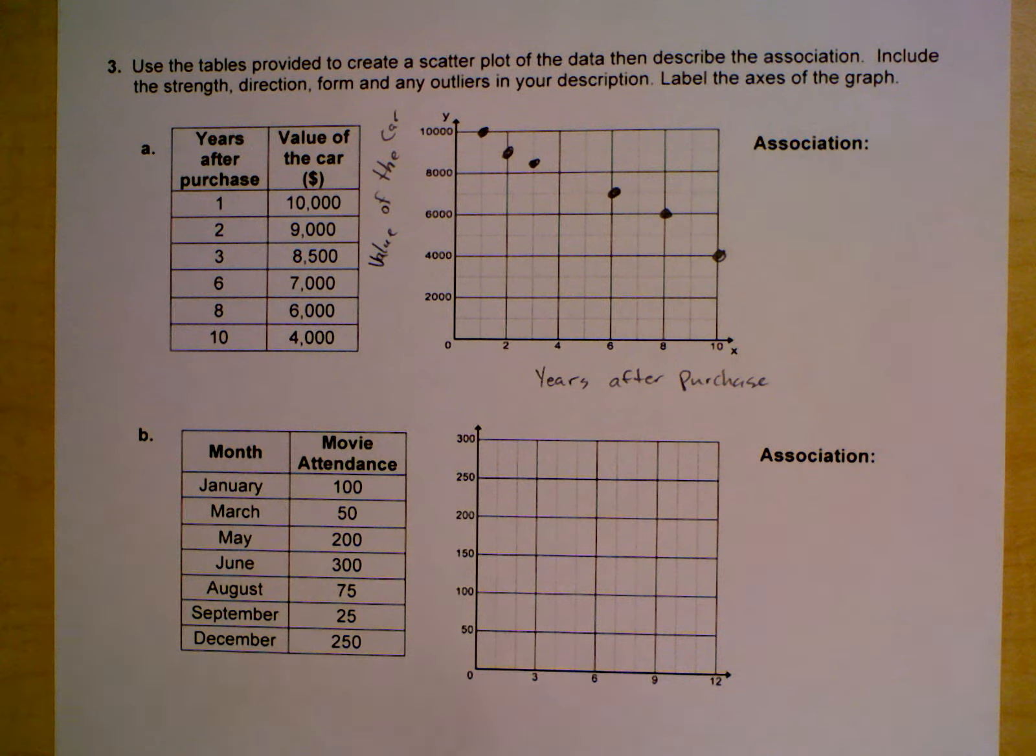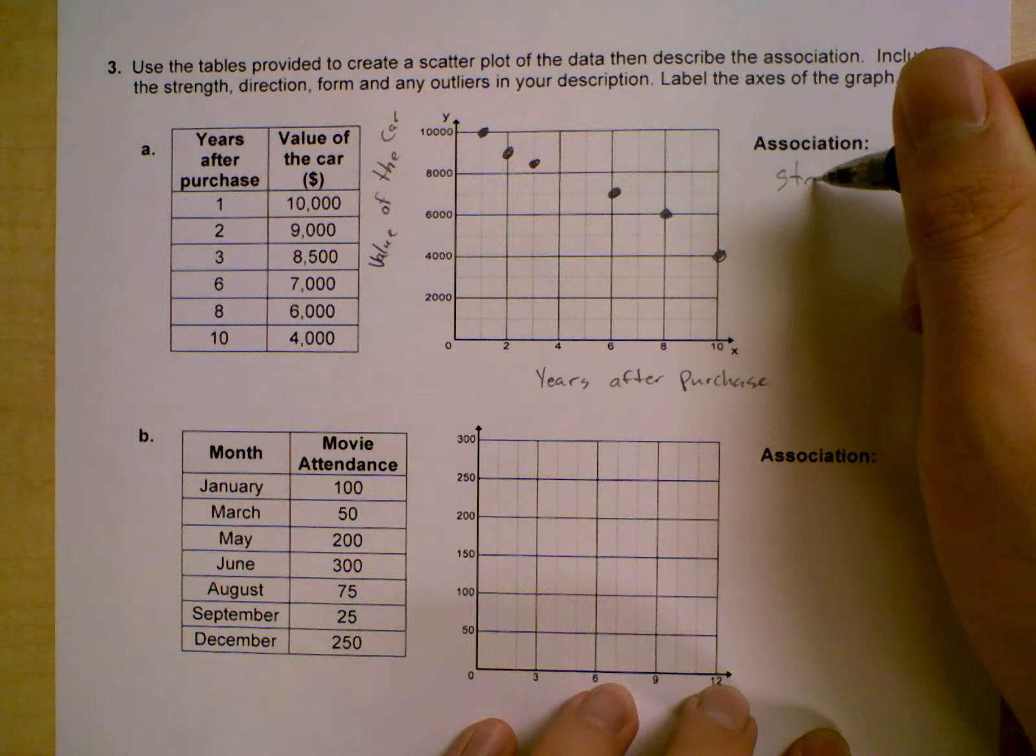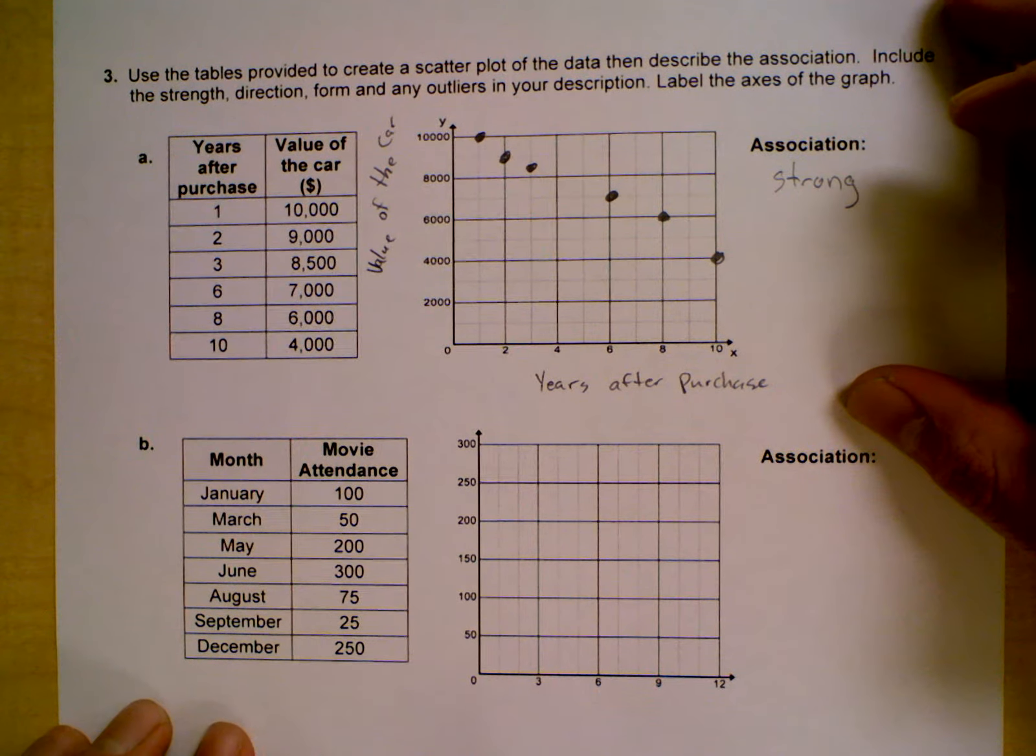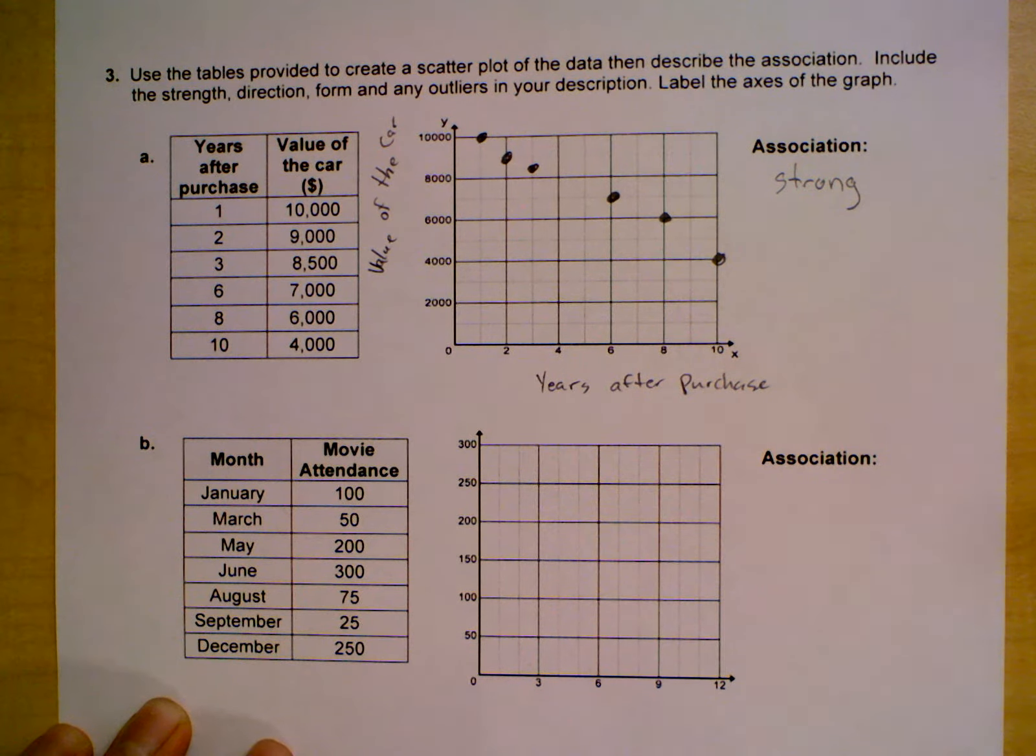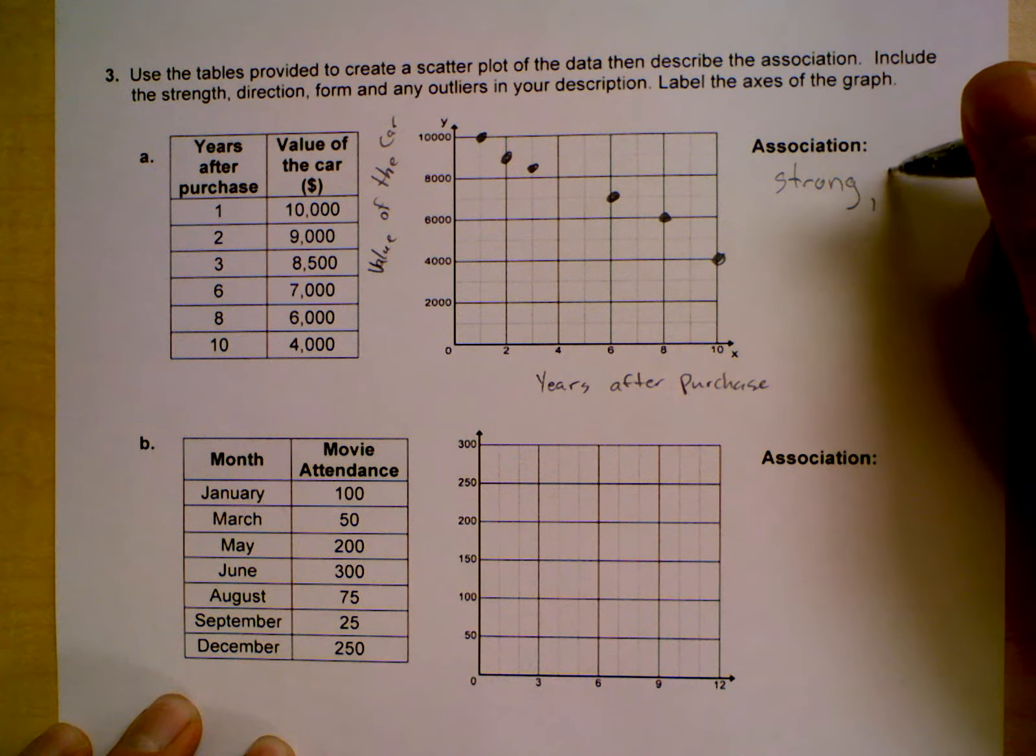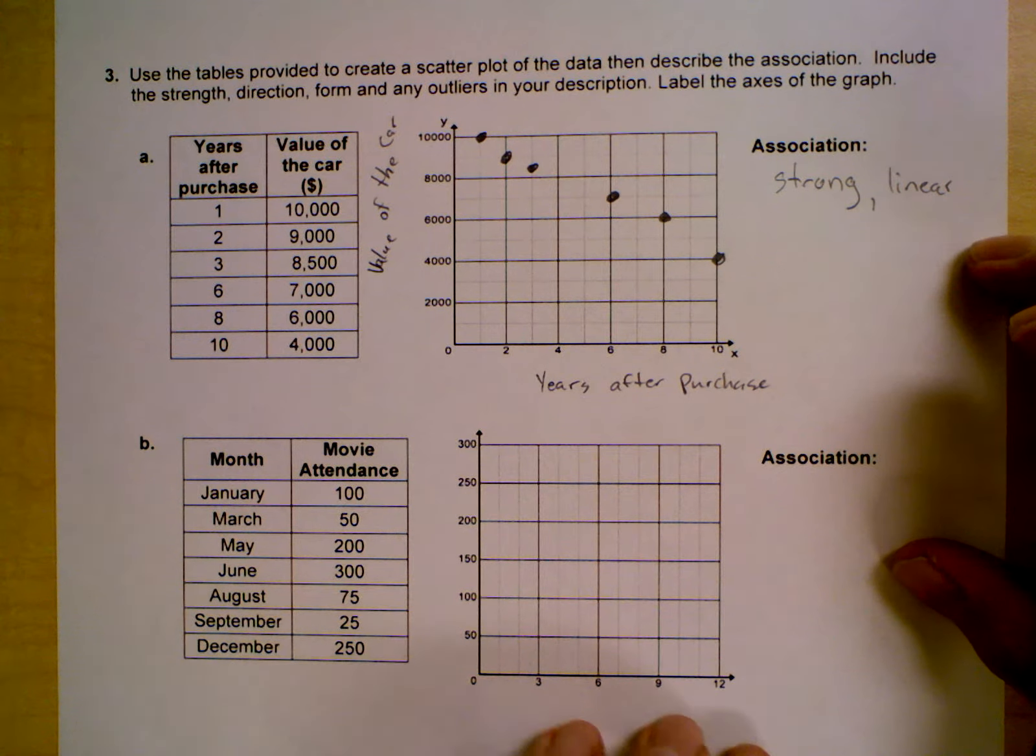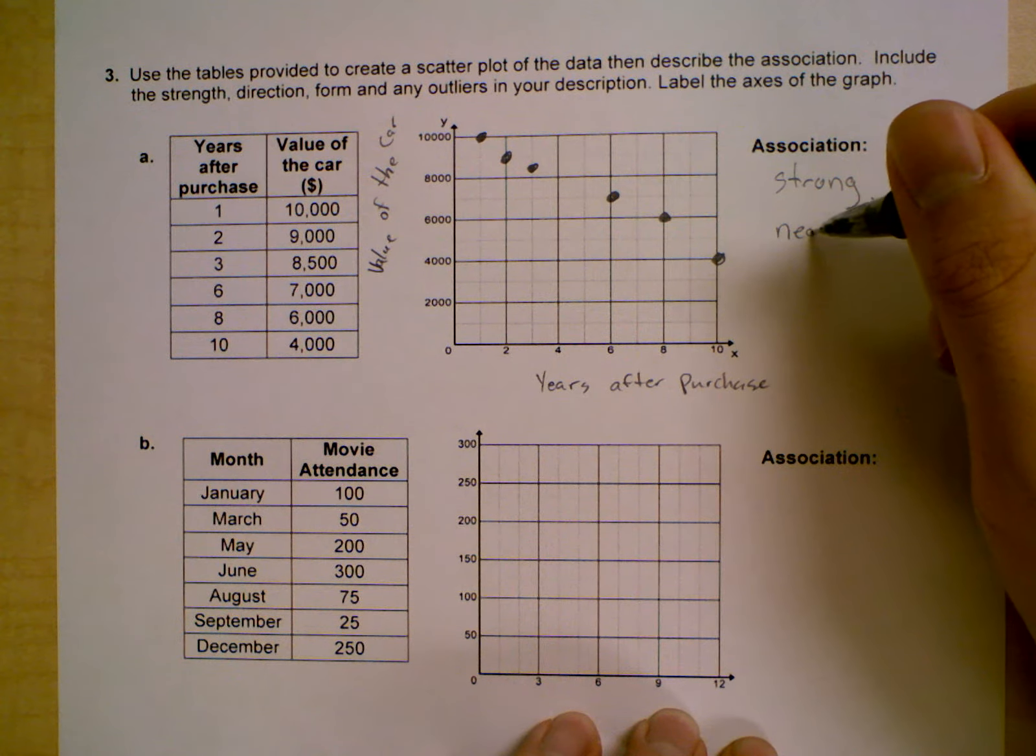First, we want to describe the association. Go ahead and answer the questions. The association is going to be strong if it's pretty much all in a straight line, very close to the line of best fit. It is linear, and then it does have a negative association.